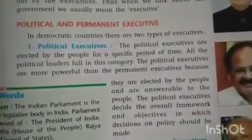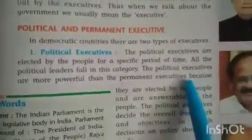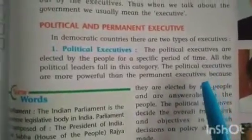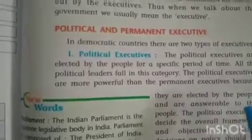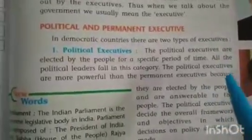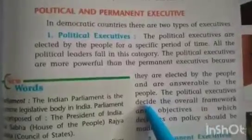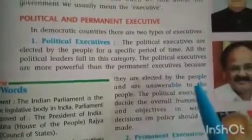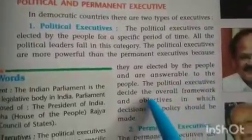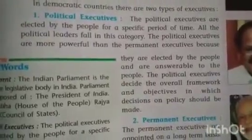Political executives are those who are elected by the people for a specific period of time — for five years, like the Prime Minister and the Council of Ministers. All political leaders fall in this category. Political executives are more powerful than permanent executives because they are directly elected by the people and are answerable to the people. They decide the overall framework and objectives in which policy decisions should be made.